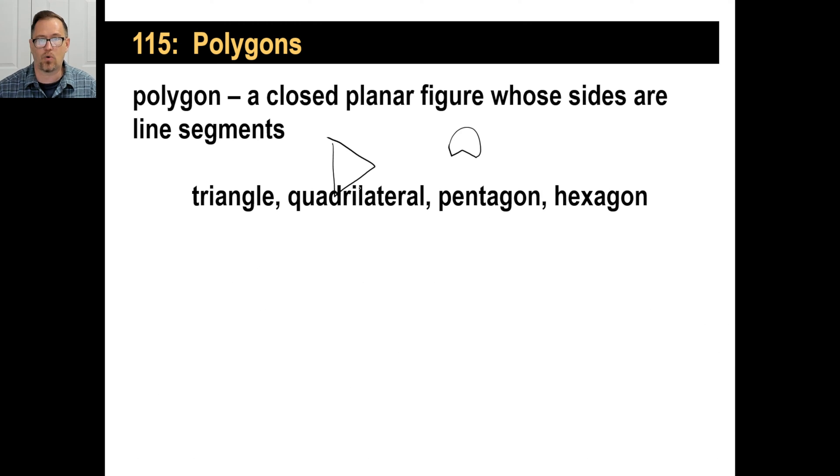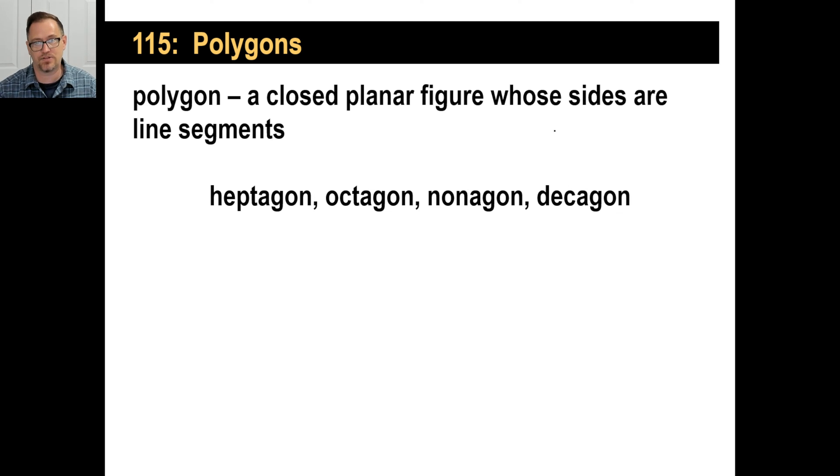Triangle has three sides. Quadrilateral - you should just know quad means four. Pentagon is something that has five sides. A hexagon has six. Just make sure that you know these. Heptagon, seven. Octagon, like a stop sign, eight sides. Nonagon, nine. Decagon is 37 sides - no, I'm just kidding. Decagon has 10 sides.